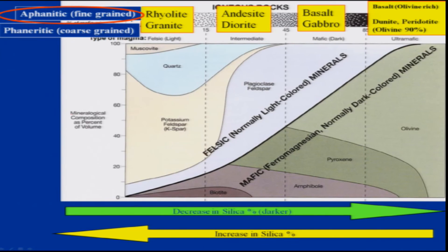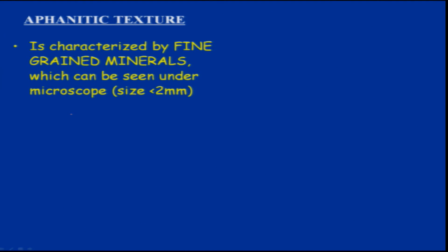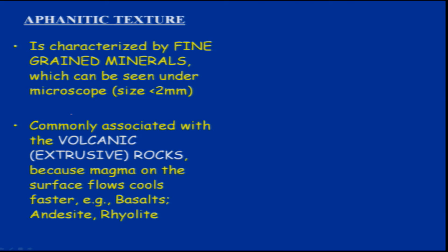Then we have aphanitic fine-grained rocks: rhyolite and basalt. Aphanitic texture is characterized by fine-grained minerals which can only be seen under a microscope because the size is less than 2 mm. These are commonly associated with volcanic, extrusive rocks because magma on the surface cools faster and forms very fine crystals. Examples are basalt and rhyolite.